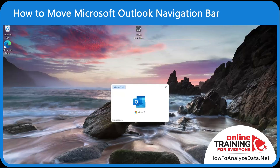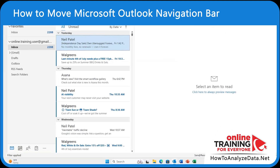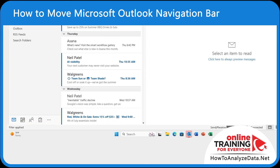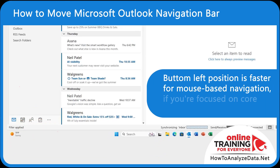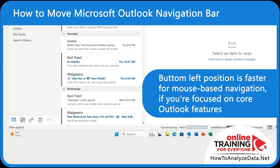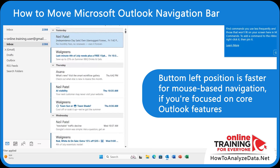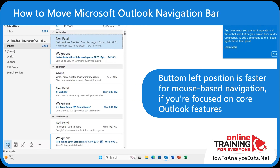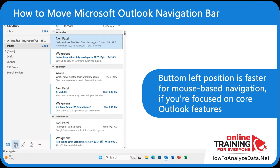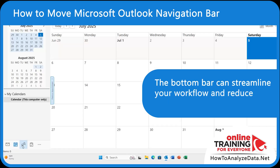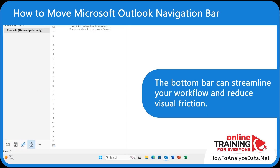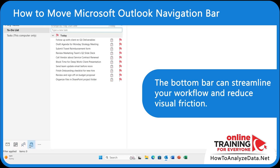Once Outlook is restarted, you'll see the navigation bar in the bottom left corner. The bottom left position is faster for mouse-based navigation, especially if you're focused on core features like email, calendar, or tasks. The bottom bar can streamline your workflow and reduce visual friction.